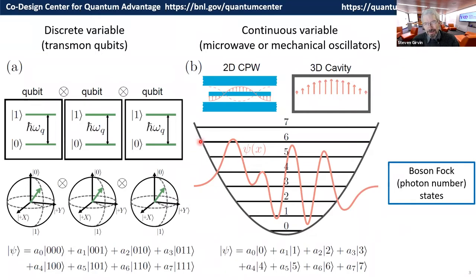A harmonic oscillator — for us, microwave photon modes in three-dimensional cavities or two-dimensional coplanar waveguide resonators — has in principle an infinite number of states. If you use the lowest 2^N of those states, then you can represent or replace N qubits with a single degree of freedom that has a large Hilbert space, assuming you can control it.